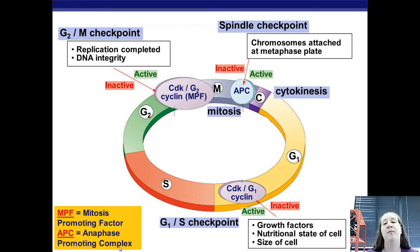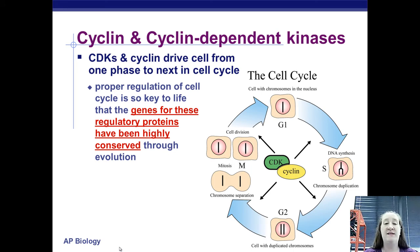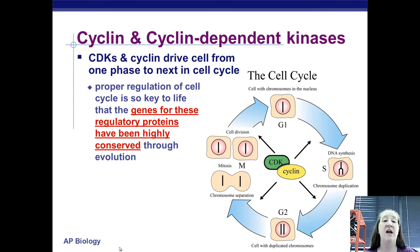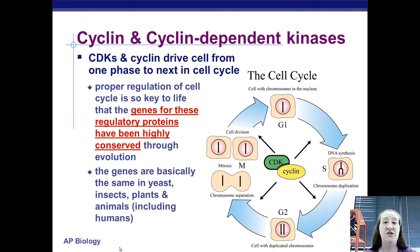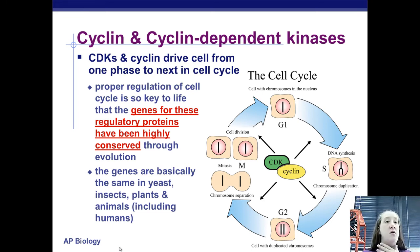The cyclin-CDK kinase complex is the most important internal factor helping a cell know when to divide. Once it reaches a high enough level, the cell is ready to divide. The genes that make these proteins are highly conserved — over millennia, they've stayed the same because they work so well that natural selection has never produced anything better. Yeast, insects, plants, and animals all share the same genes for making CDK.